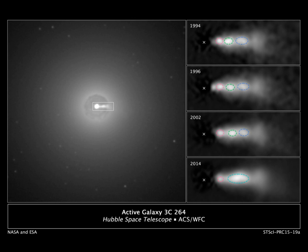Relativistic jets are beams of ionized matter accelerated close to the speed of light. Most have been observationally associated with central black holes of some active galaxies, radio galaxies or quasars, and also by galactic stellar black holes, neutron stars or pulsars. Beam lengths may extend between several thousand, hundreds of thousands, or millions of parsecs.